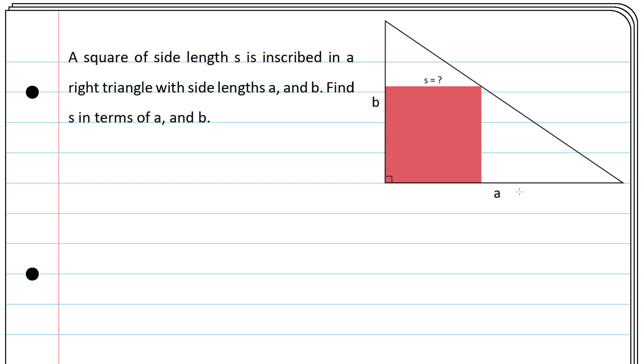All right, look at the big triangle here, we call it ABC, and look at the smaller right triangle here, we call it ADE. The triangles ABC and ADE are right triangles and share an angle A here.